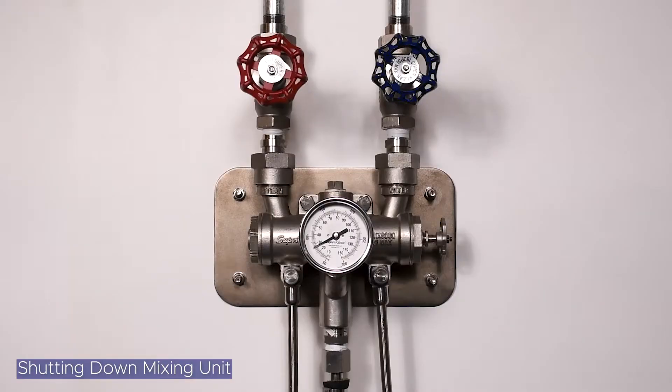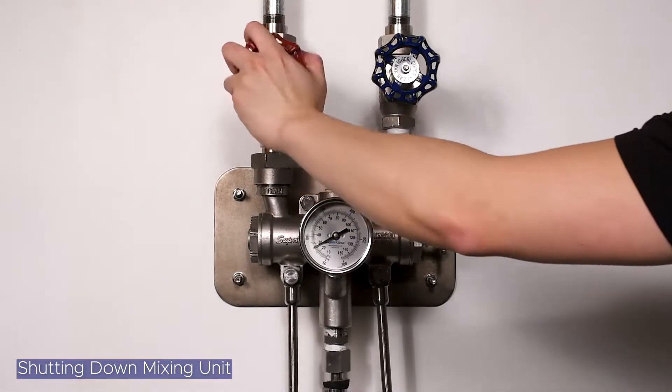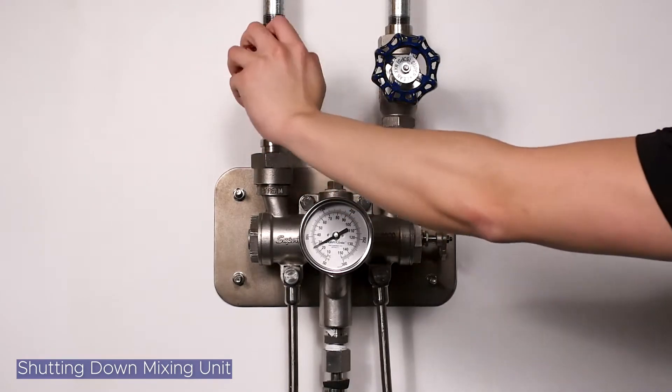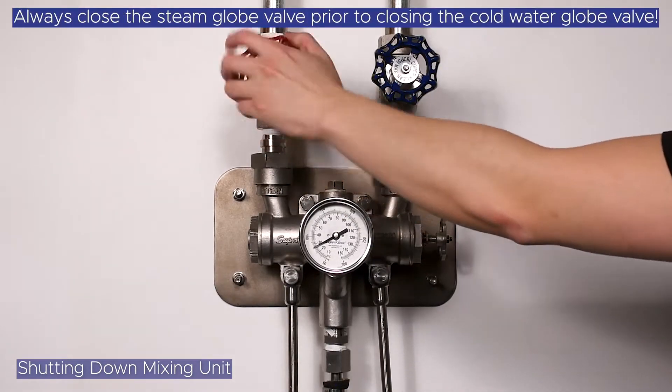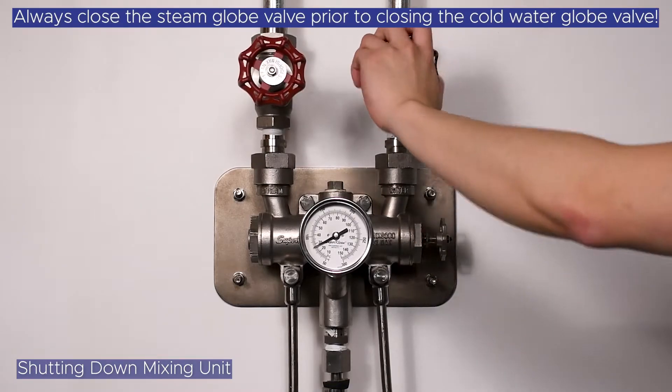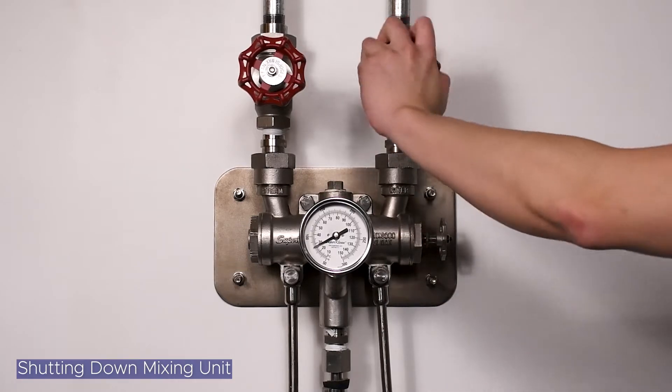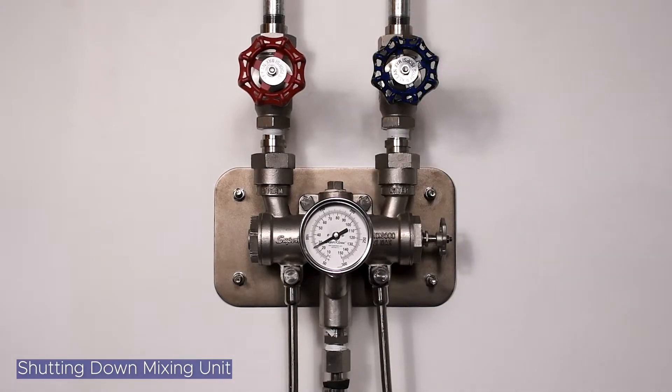To shut down your mixing unit, close the steam valve by turning the red globe valve clockwise until it is fully closed. The steam valve should always be closed before the cold water valve. Next, close the cold water valve by turning the blue globe valve clockwise until it is fully closed.